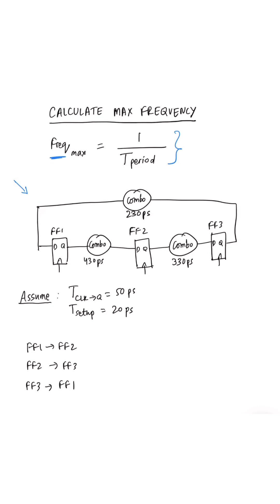We know that in this circuit, there are three timing paths: one from FF1 to FF2, one from FF2 to FF3, and one from FF3 to FF1.